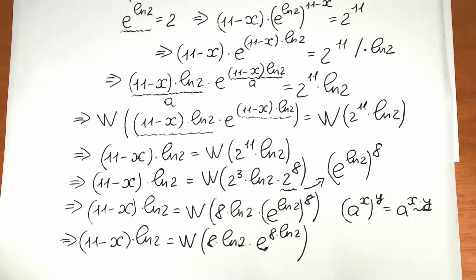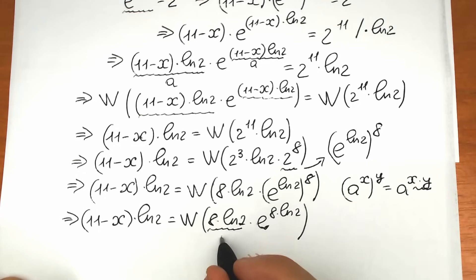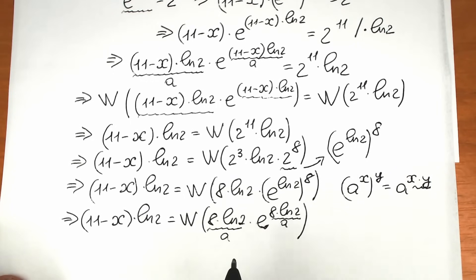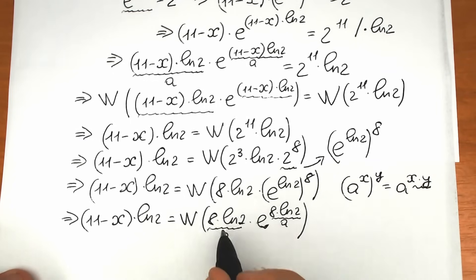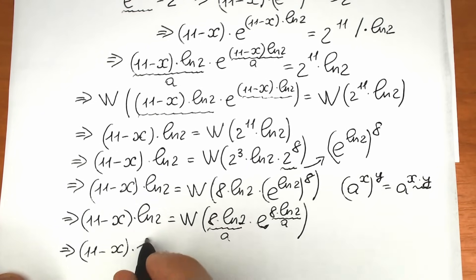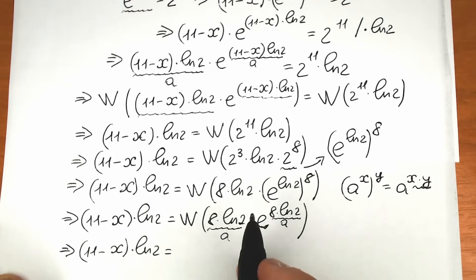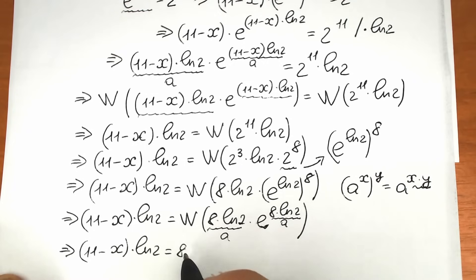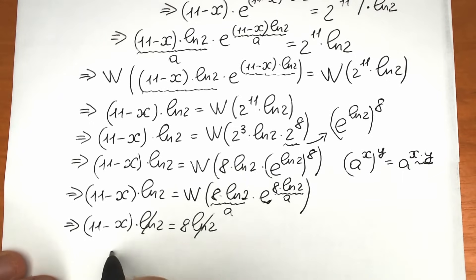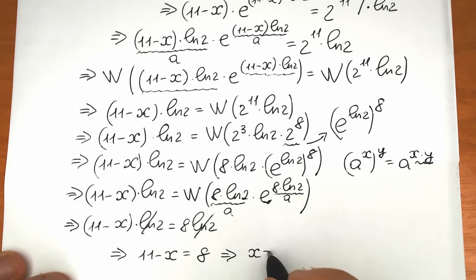Right now let's look closely at what we have on the right side: 8 times natural log 2 — this is our a — and we have e to the power 8 times natural log 2, which is the same a. So this is our classic Lambert W case, and as a result this equals a, which is 8 times natural log 2. So 11 minus x times natural log 2 equals 8 times natural log 2. We can cancel natural log 2 from both sides, and as a result we have 11 minus x equal to 8, and therefore x equals 3.